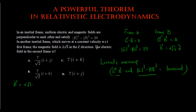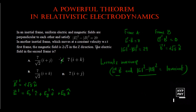then taking the dot product, the k component contributes and the other components become zero. This means the k component must not be present in the electric field of the second frame. So we can immediately eliminate the options that have a k component in the electric field.